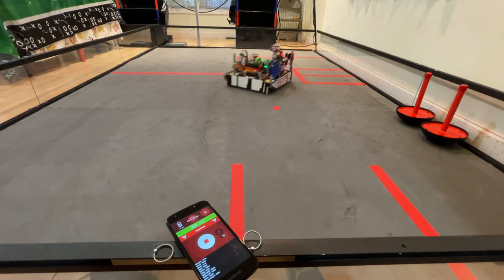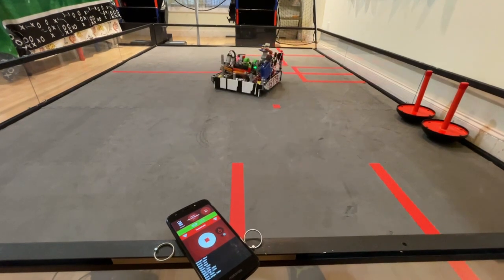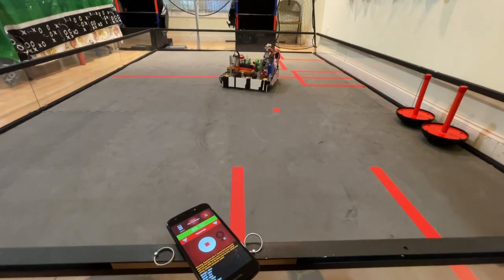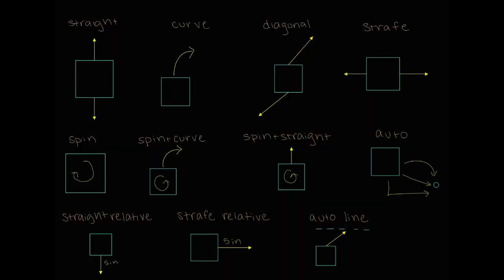Knowing where we are is helpful, but what we do with that information is even more important. Odometry allows the robot to make precise and autonomous movements. To make these calculated movements, we created a variety of functions in our base robot class. These functions take in speed, target position, heading, and calibration settings as parameters to get the robot from the current position to the target position using basic movement techniques such as straight, curve, diagonal, strafe, and spin.